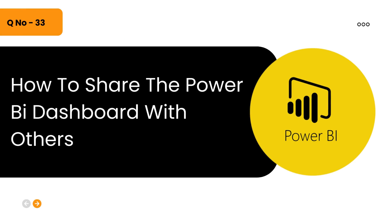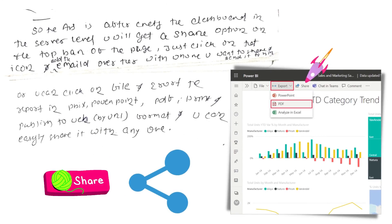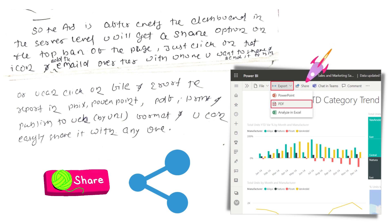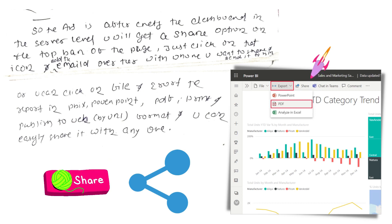The next question is: how do you share a Power BI dashboard with other team members or clients? After creating the dashboard at the server level, you will see a Share option on the top bar. Click that icon and add the email of the person you want to share with. Alternatively, you can go to File and export the report in PBIX format, PowerPoint, PDF, or print. You can also publish it to the web via URL and share that link.